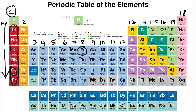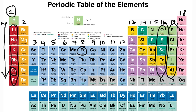Elements in a given column share similar chemical properties compared to elements not in the same column. Group 16 elements are known as the chalcogens. Group 17 elements are known as the halogens — they're non-metals with similar chemical reactivity. Elements in the same group share similar chemical properties.